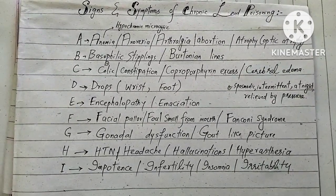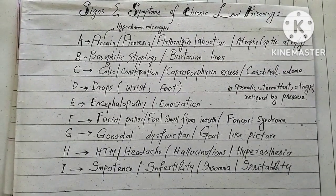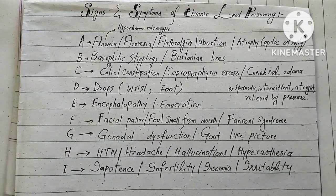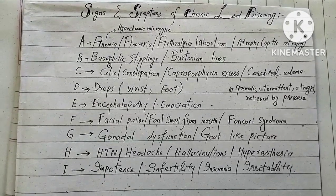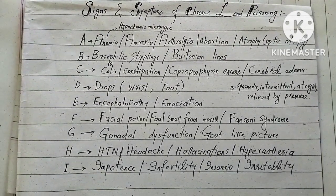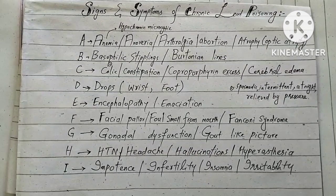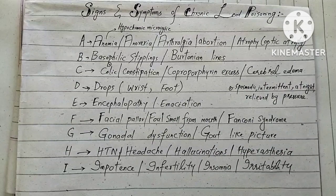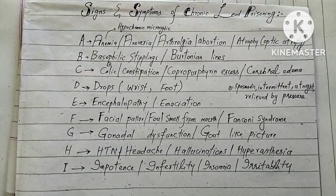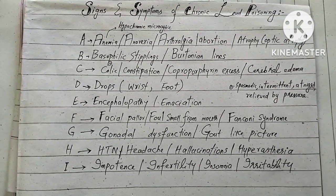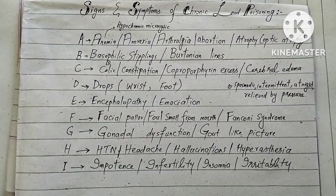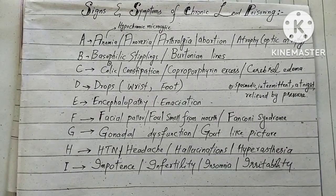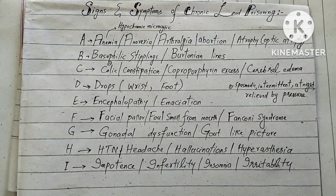B stands for basophilic stippling, which means that RBCs show punctate basophilia. This is because of altered porphyrin metabolism. There are also Bartonian lines, also called lead lines. These are bluish-black lines found on the gums of diseased teeth in a patient with chronic lead poisoning, situated in the sub-epithelium.